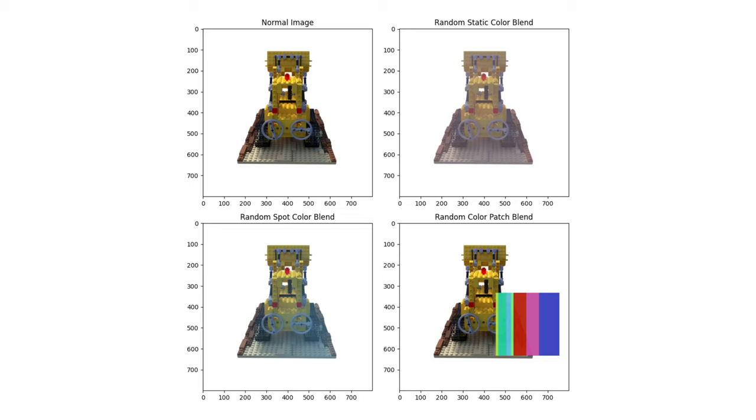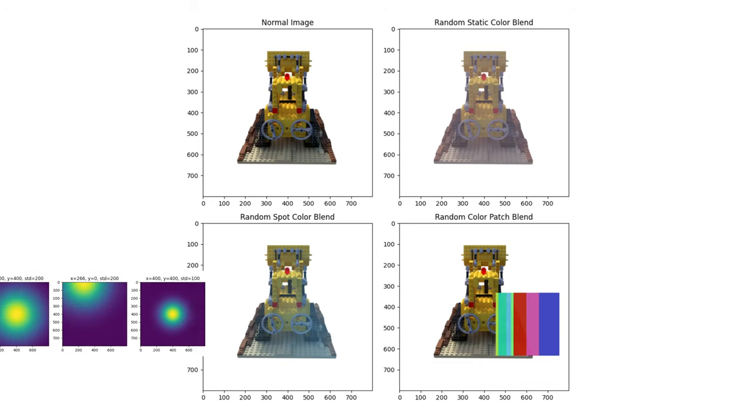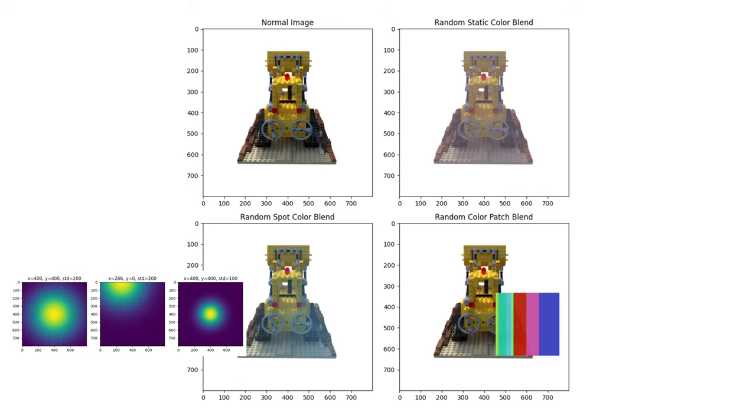The image augmentation techniques used for generating the augmented LEGO datasets are as follows. Static color blend, where a solid color is blended on top of the non-transparent pixels. Spot color blend is where a color weighted using 2D Gaussian mask is blended onto the non-transparent pixels. And random color patch blend, where a randomly generated color patch, both vertical and horizontal, with varying strip color amounts and sizes is blended onto the image.